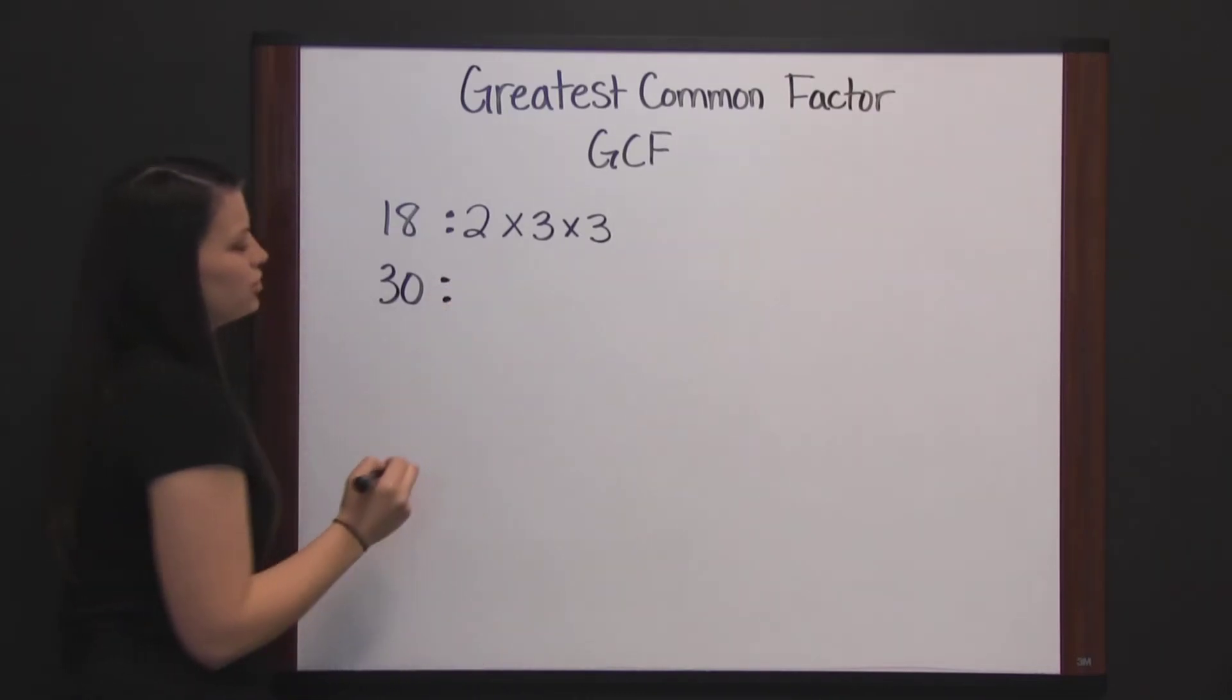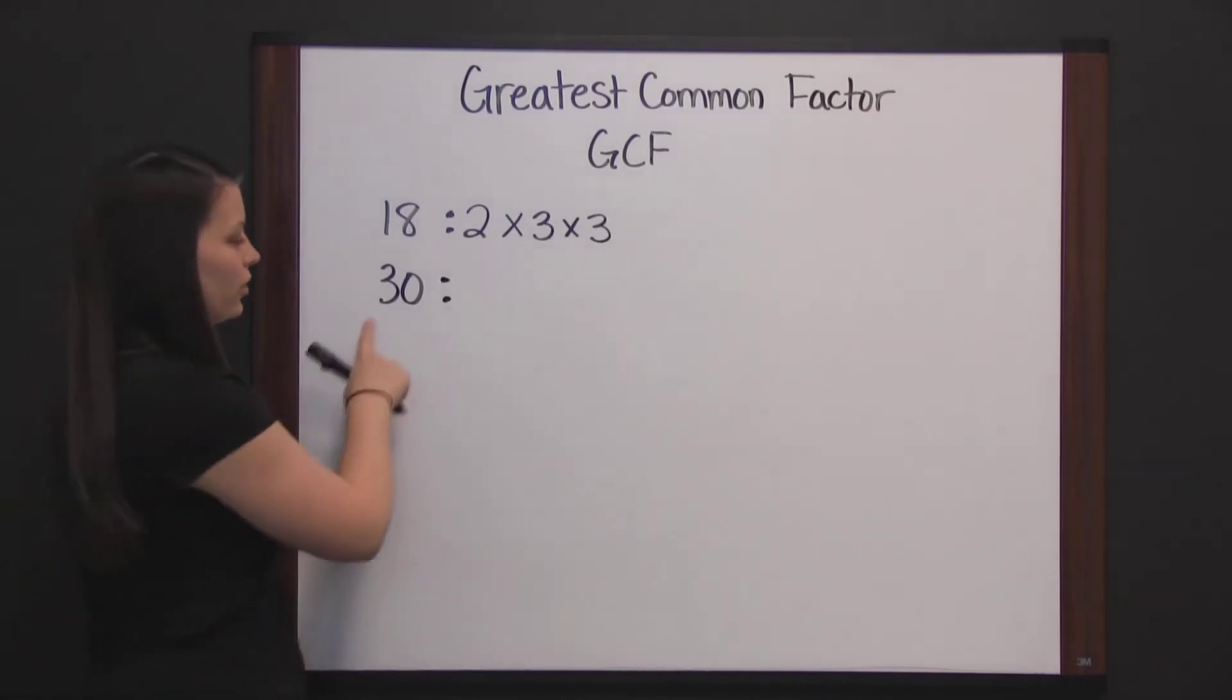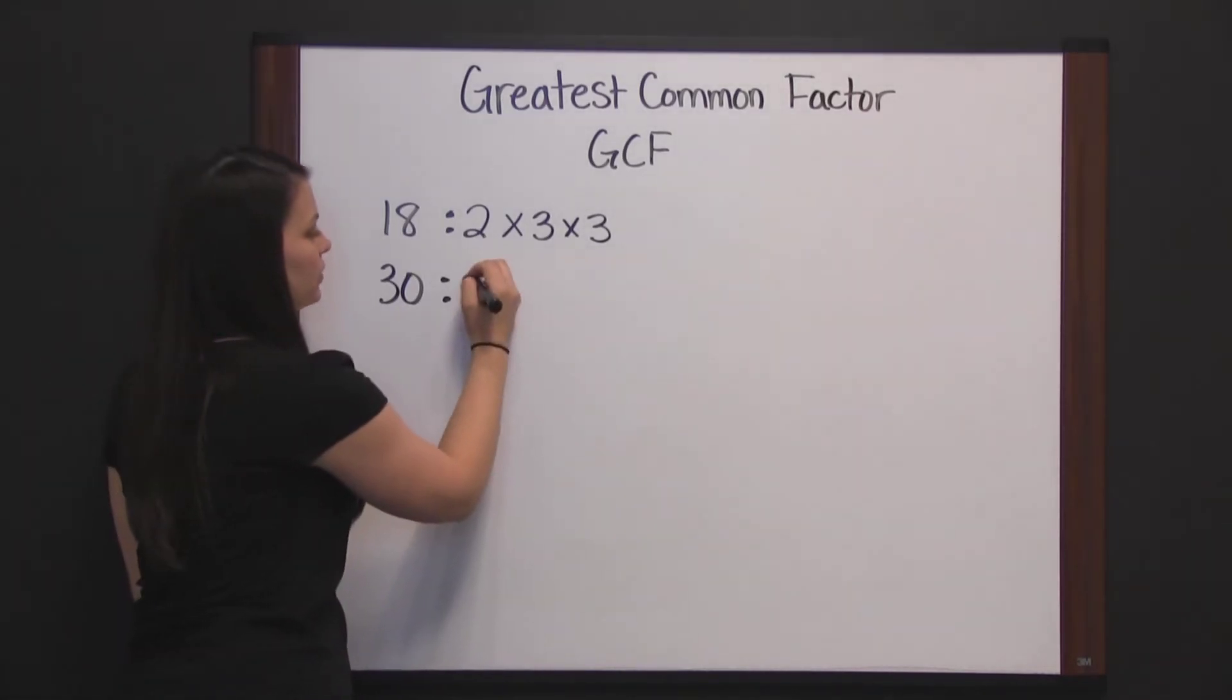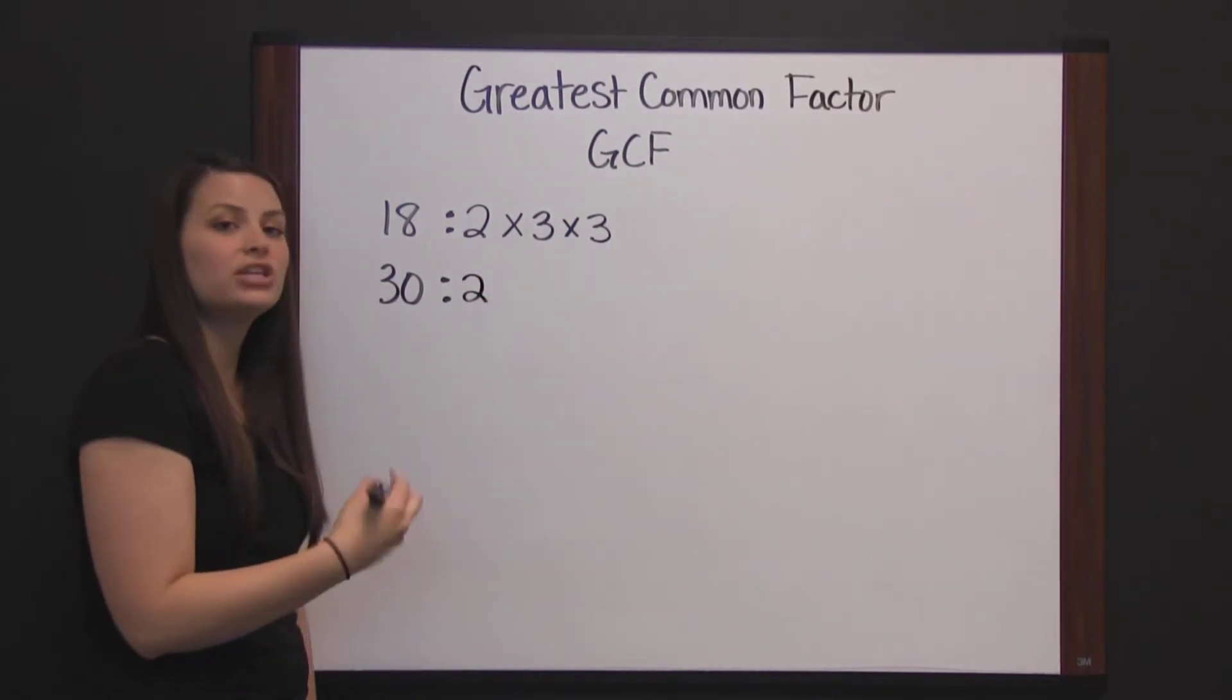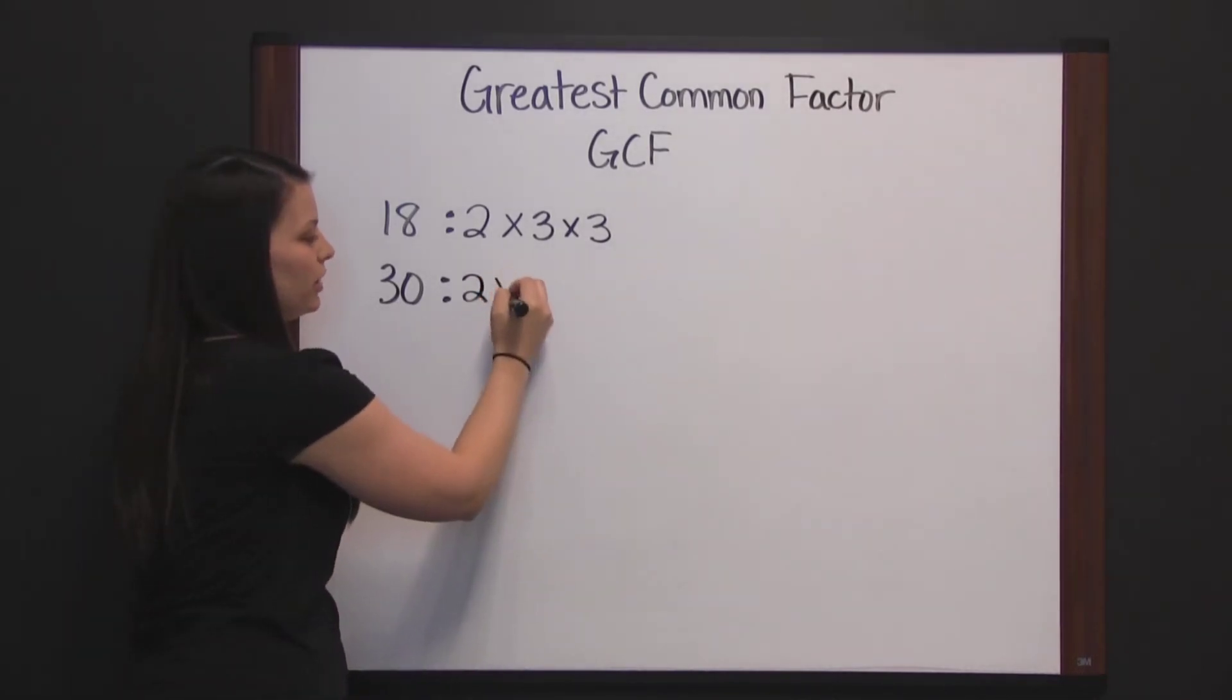The prime factorization of thirty. Thirty is divisible by two also, since it's even. So, two times fifteen would be thirty, but fifteen is not prime.